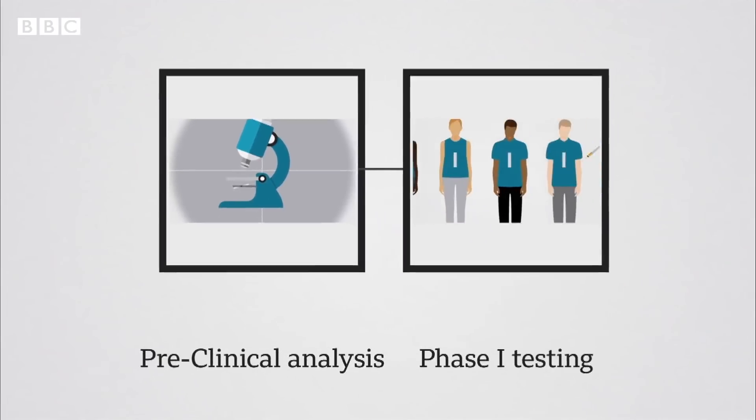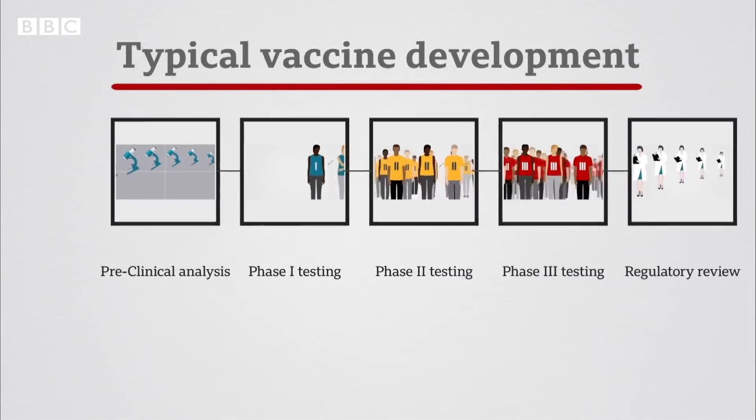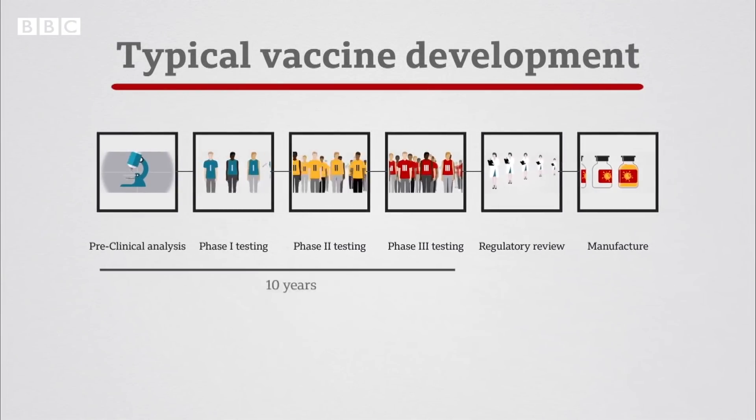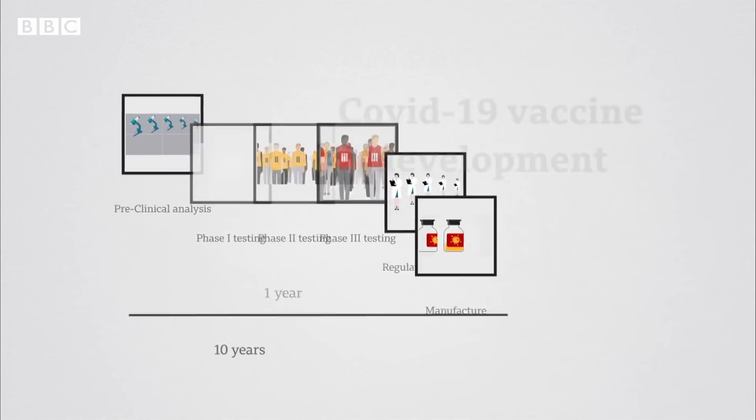These are all the steps normally taken to create a safe and working vaccine. It usually takes at least a decade to complete them all, but with COVID, they've all been done in less than a year.